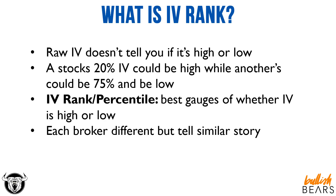This is where it becomes very important to understand implied volatility. Raw implied volatility itself does not tell you if it is high or low. For instance, if a stock's implied volatility is 20%, that could be high for that particular stock, while another stock's implied volatility is 75% and that could actually be low. So raw IV on a chart does not tell you whether it's high or low — you need to look at something called either implied volatility rank or IV percentile.